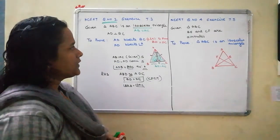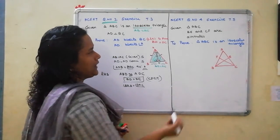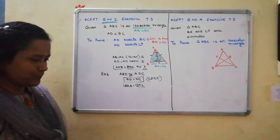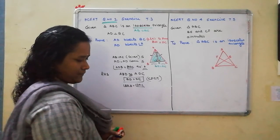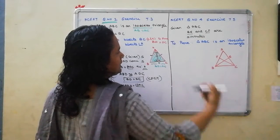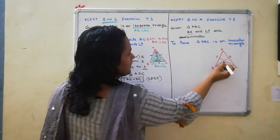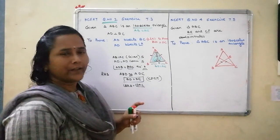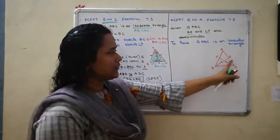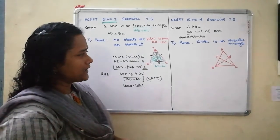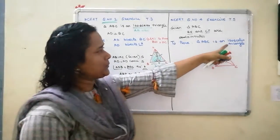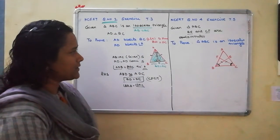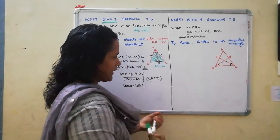Next, question number 4. The question is: given triangle ABC, altitudes BE and CF are given. You need to prove that triangle ABC is an isosceles triangle. There are 2 ways to prove an isosceles triangle: you can prove AB equal to AC, or prove that the base angles are equal. If we prove angle B equal to angle C, it automatically means it is an isosceles triangle. So first I am considering triangle BCE.